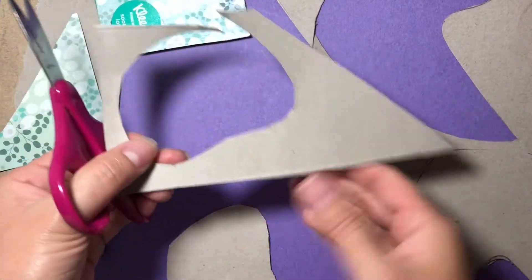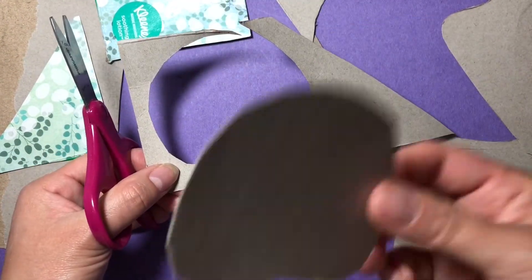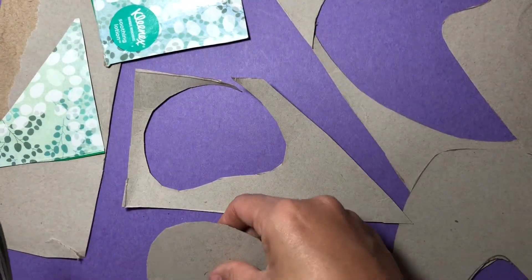You can even use the other part that you just had your object cut out. This is your positive shape and this would be your negative shape because now it's missing that piece.